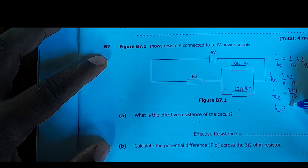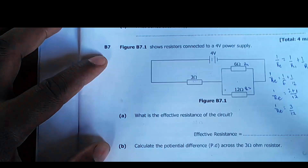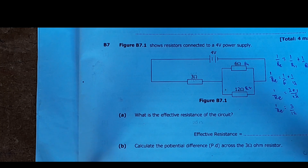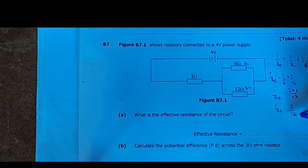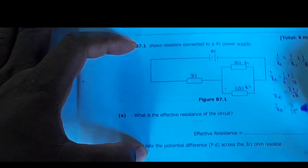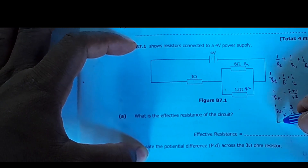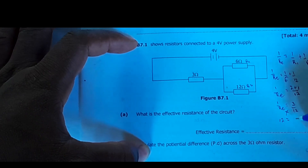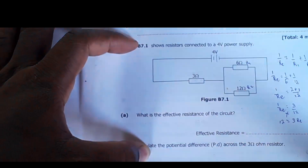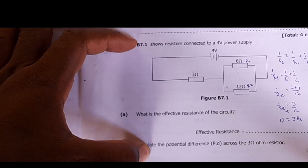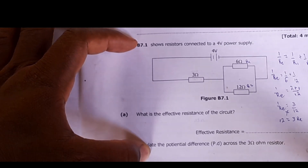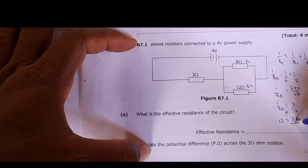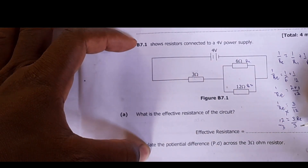This takes us back to grade mathematics. When you have fractions like this, you get rid of them by cross-multiplying. So 12 times 1 equals 12, which equals Re times 3, giving us 3Re — that is the equivalent resistance. Our interest is to find the equivalent resistance, so we divide both sides by 3.